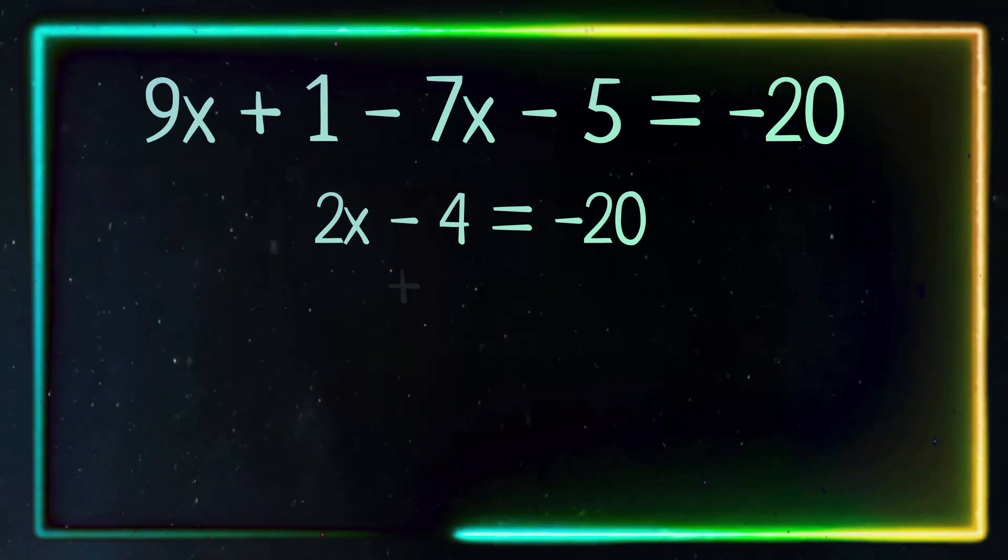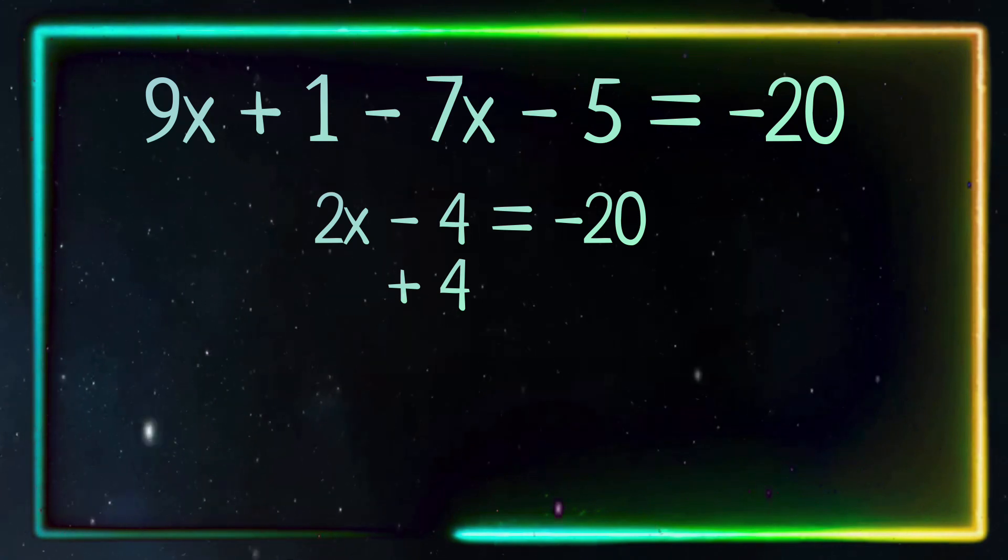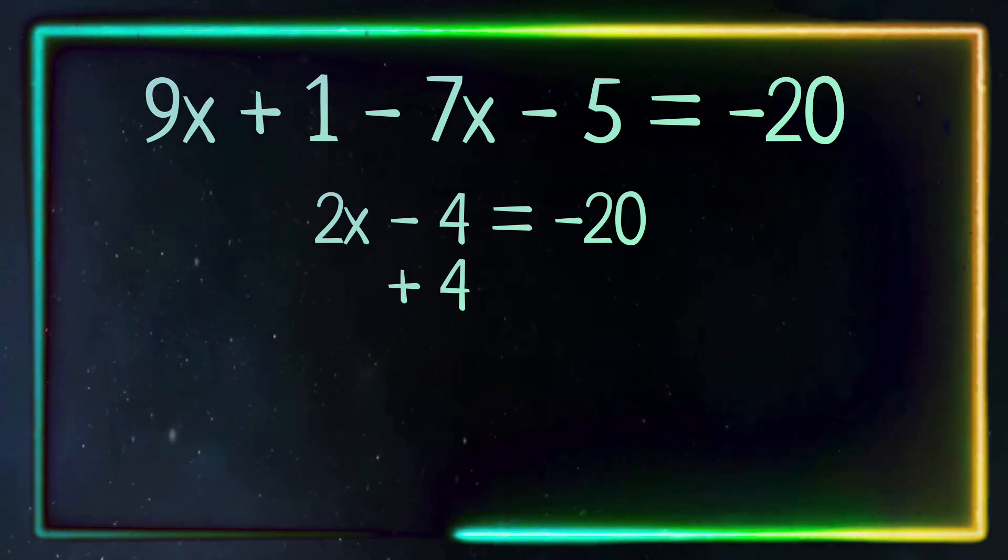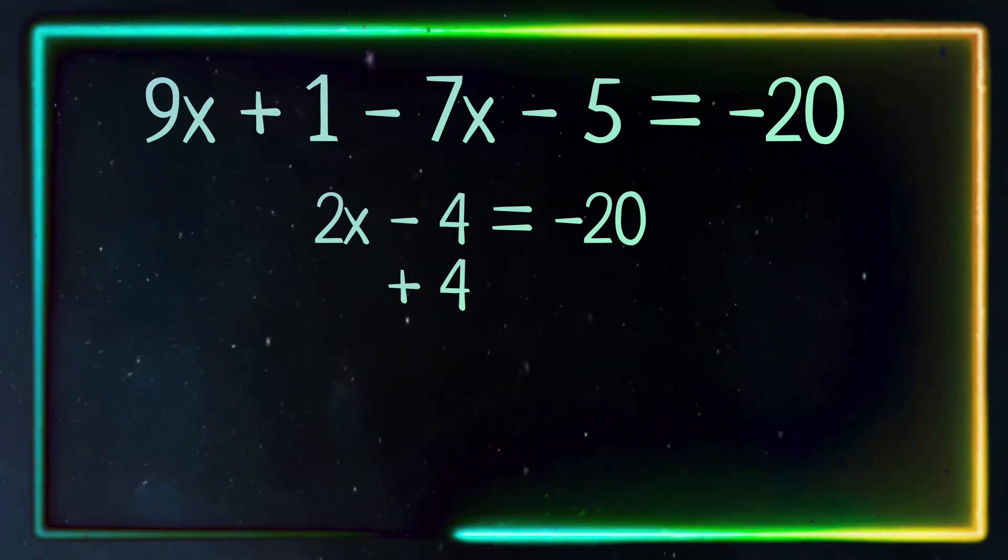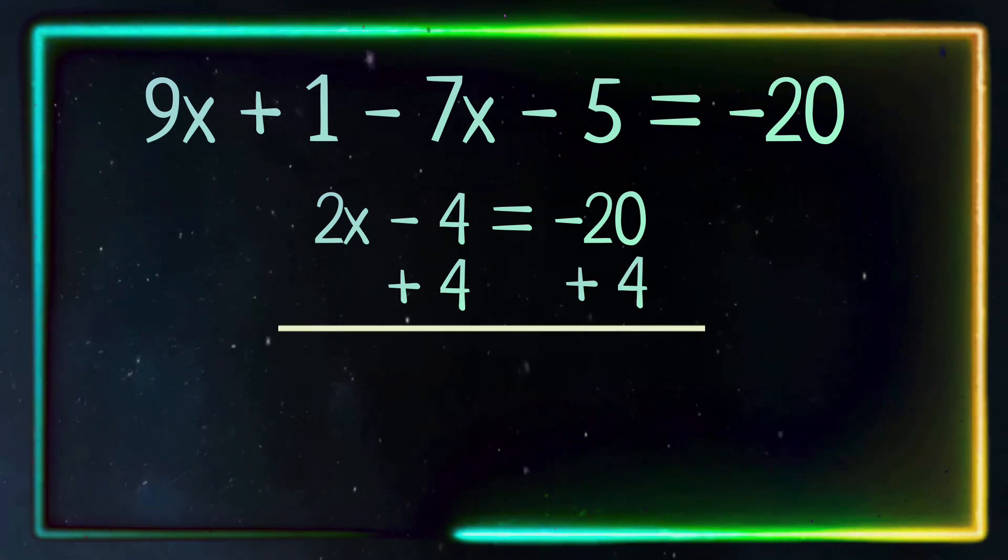The inverse of negative 4 is positive 4, and that will give us a 0, canceling out the negative 4 on this side. But remember, what you do on this side you have to do to the other side. So let's do that.